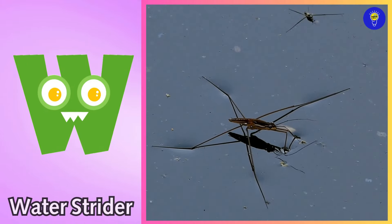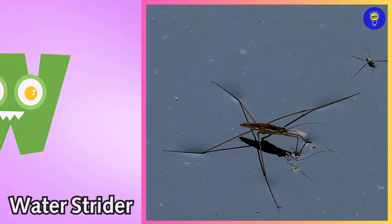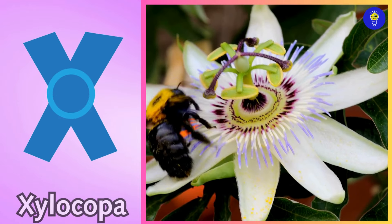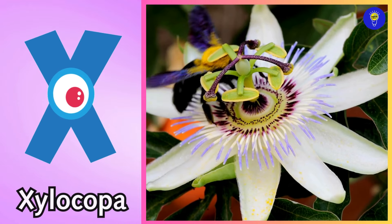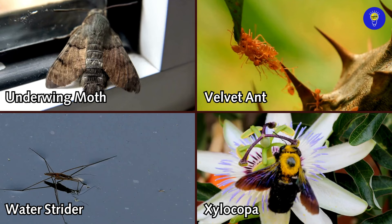W is for water strider. w, water strider. X is for xylocopa. x, xylocopa.